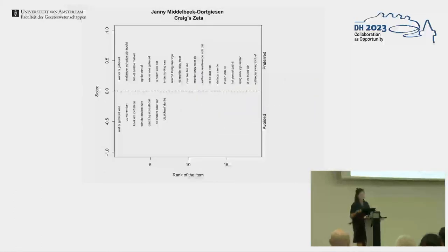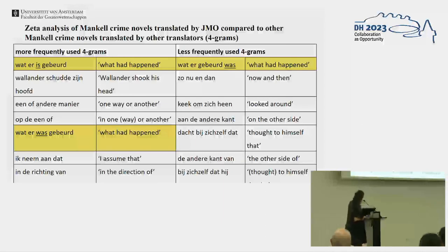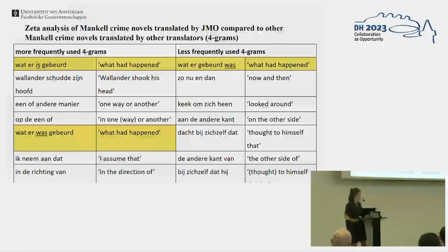I also looked at n-grams — I'm just showing four-grams here. What's interesting is that n-grams can also give us clues about grammatical differences. For this translator, I found a preference in the order of verbs. In Dutch, you can say both 'wat er is gebeurd' or 'wat er gebeurd is' — the auxiliary verb can come before or after the main verb, and both are grammatically correct with some regional variants. But she clearly has a preference for 'is gebeurd' — auxiliary first — compared to the other translators.